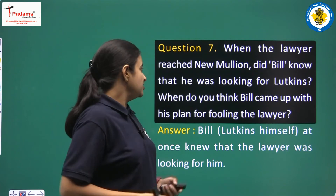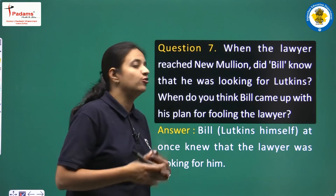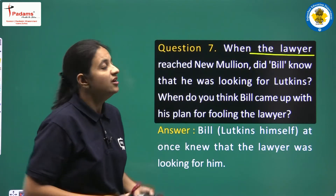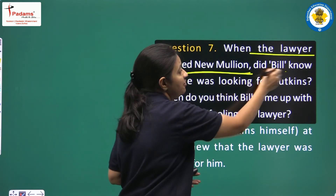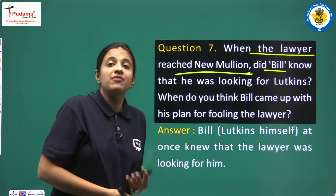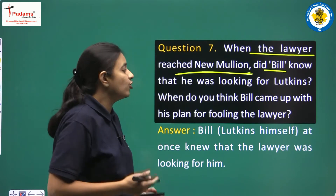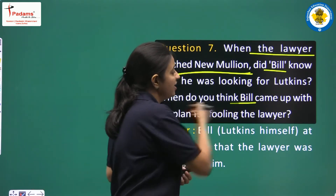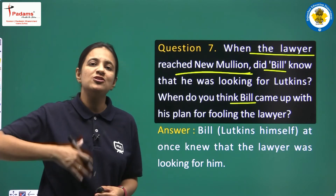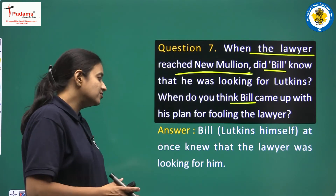Question 6: When the lawyer arrived at New Mullion, did Bill know he was looking for Lutkins? When did Bill come up with his plan for fooling the lawyer? Bill, who is Lutkins himself, at once knew that the lawyer was looking for him, because the lawyer's very first sentence was: 'I want to find a man named Oliver Lutkins.'